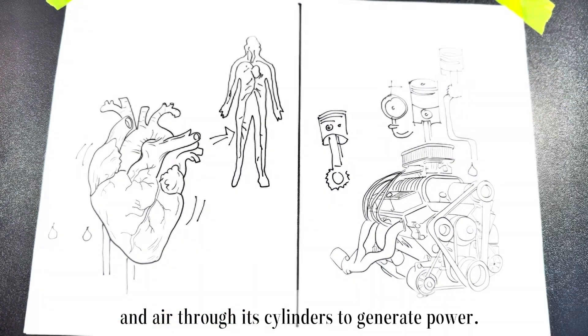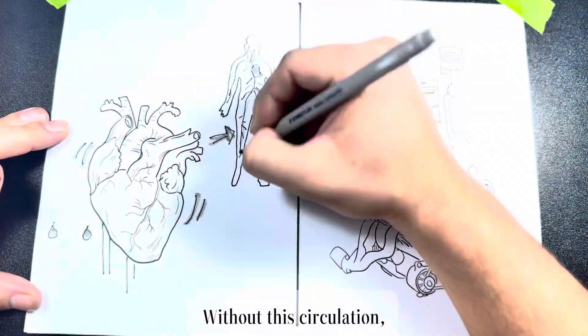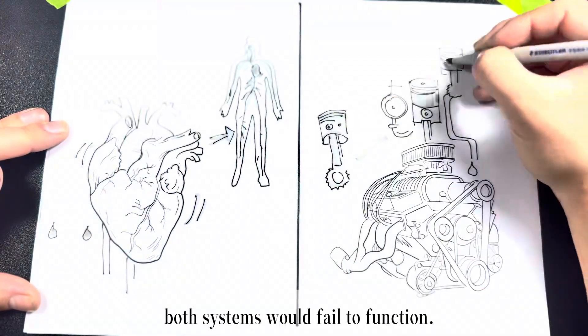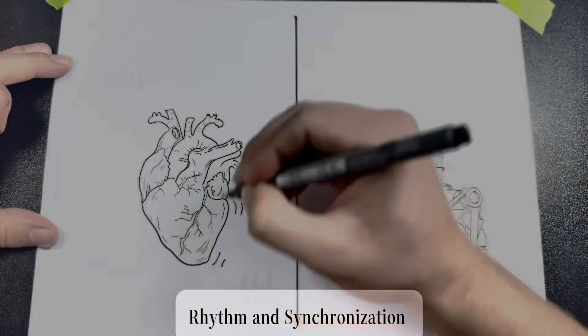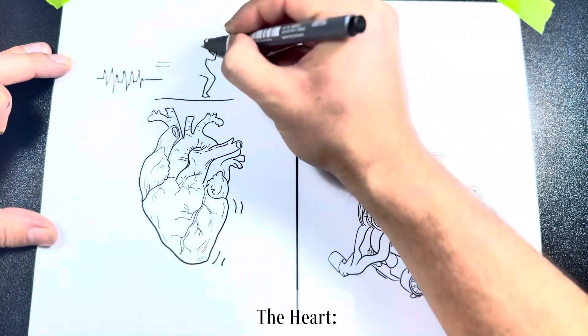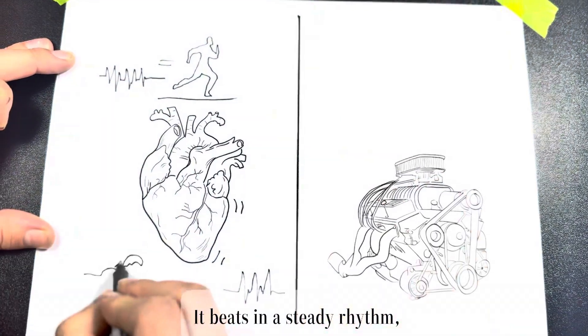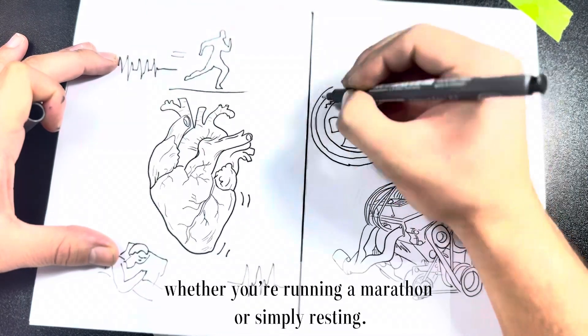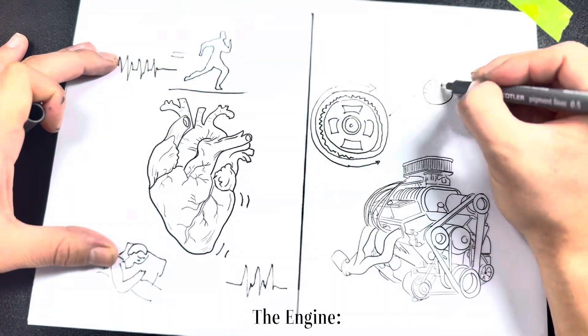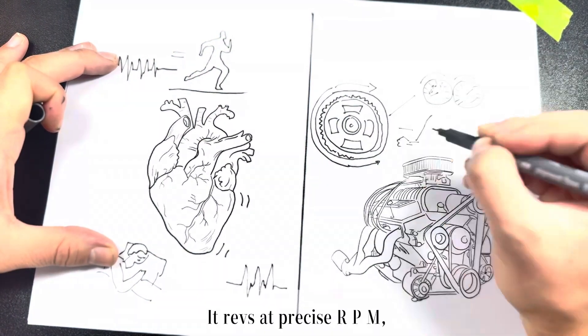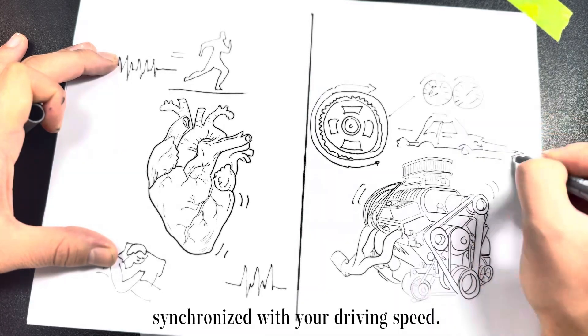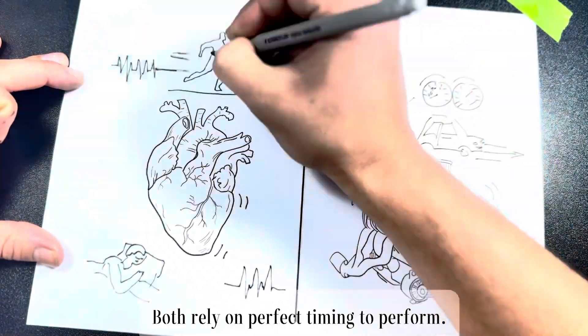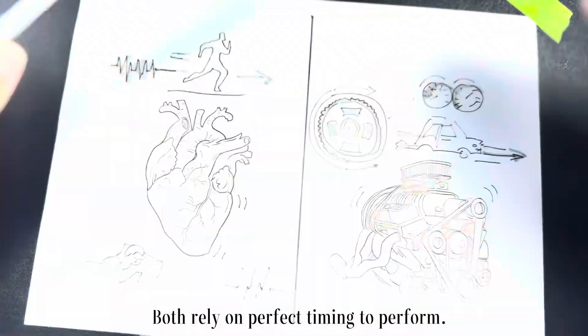Rhythm and synchronization: The heart beats in a steady rhythm, adjusting its pace as your body demands—whether you're running a marathon or simply resting. The engine revs at a precise RPM, synchronized with your driving speed. Both rely on perfect timing to perform.